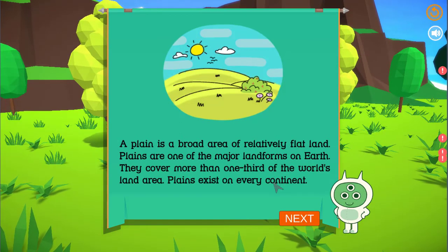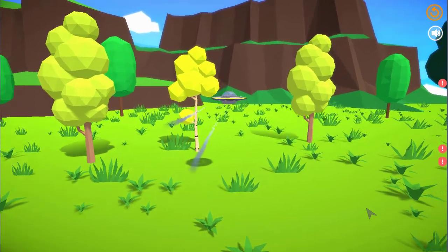A plain is a broad area of relatively flat land. Plains are one of the major landforms on Earth. They cover more than one-third of the world's land area. Plains exist on every continent.